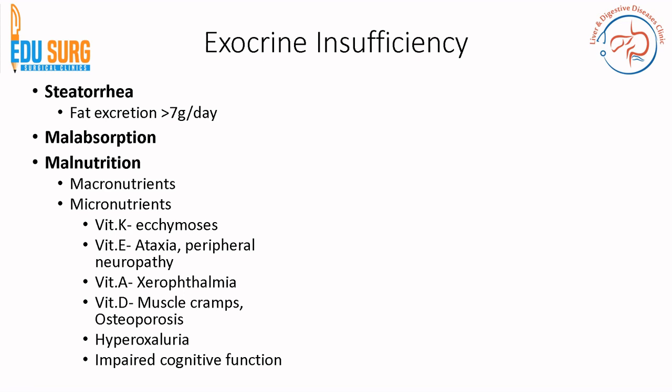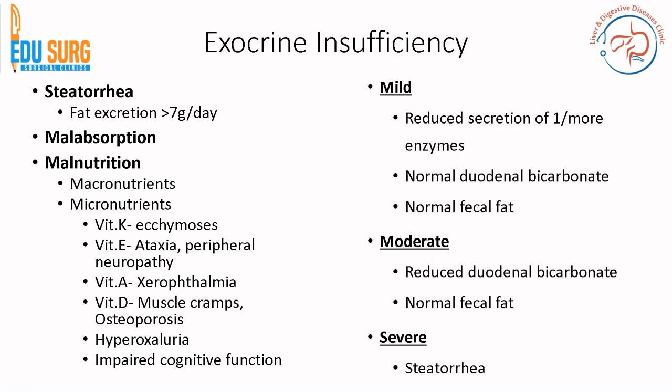Regarding exocrine insufficiency, steatorrhea is the cardinal symptom, defined as fat excretion greater than 7 grams per day. These patients suffer from malabsorption and malnutrition, especially of fat-soluble vitamins — Vitamin K, E, A, and D — leading to symptoms related to these micronutrient deficiencies. Exocrine insufficiency is graded as mild, moderate, and severe, and it is important to note that only severe exocrine insufficiency leads to steatorrhea.